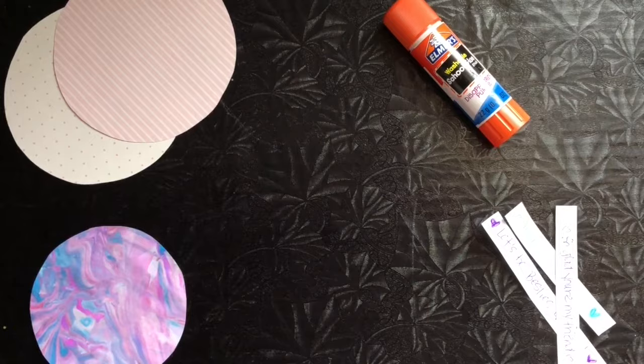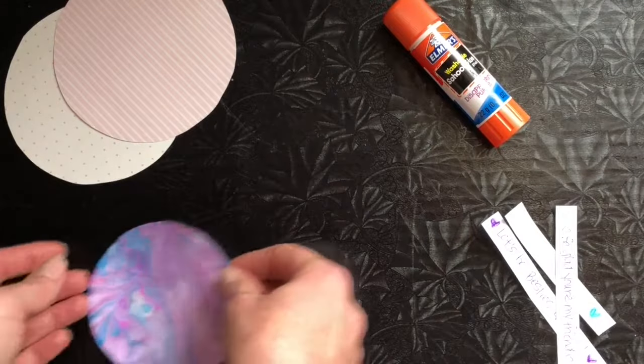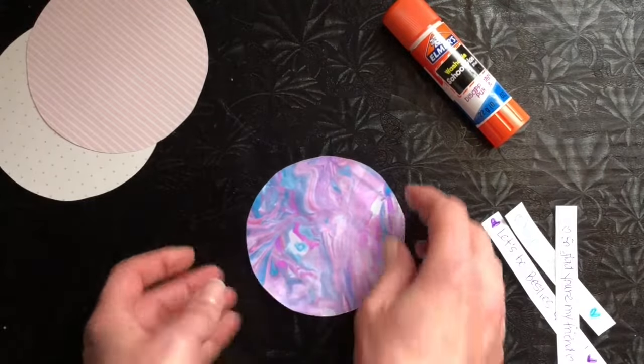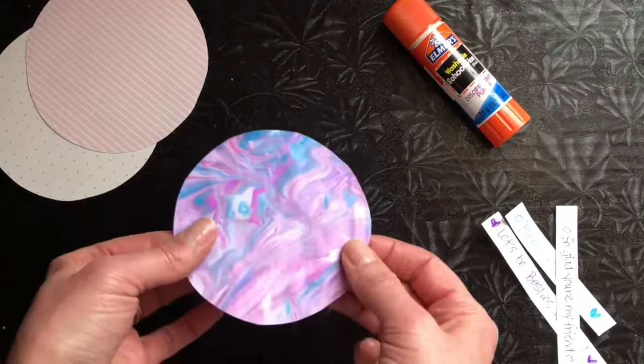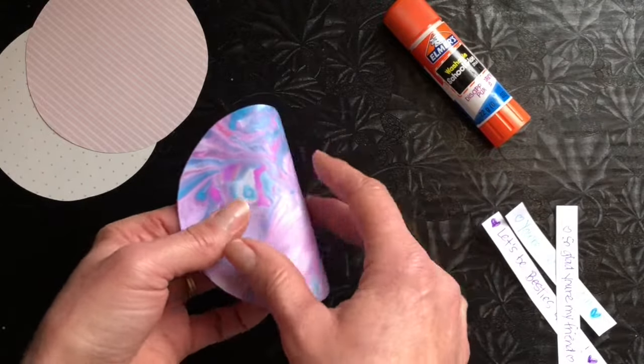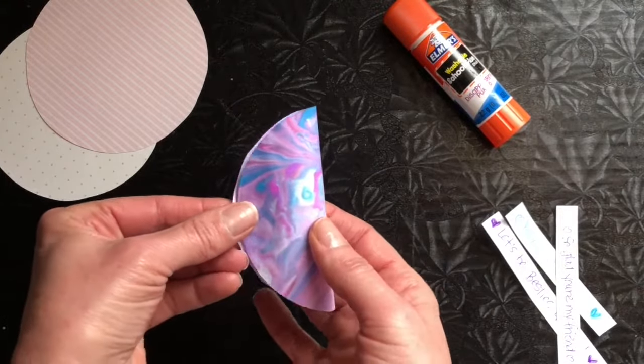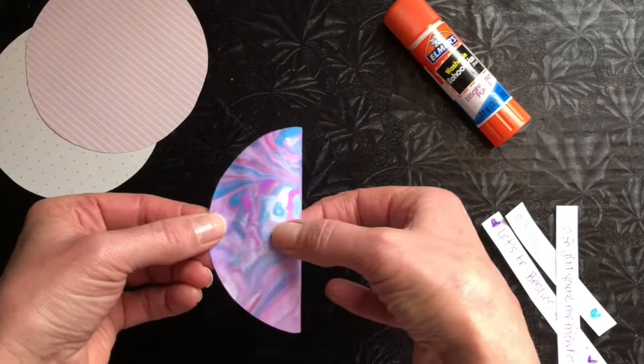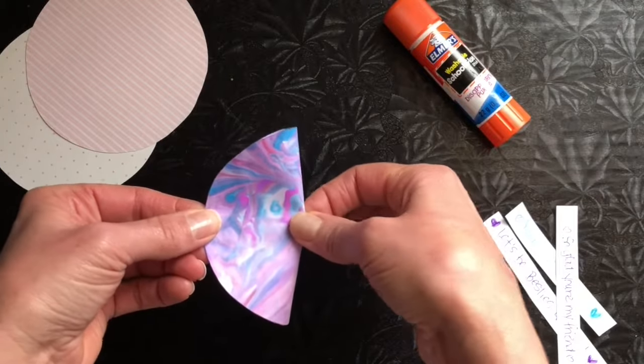So to make your fortune cookies you're going to take your piece of paper. Now it might be helpful if you first fold it, don't crease it, and just pinch a crease right at the center.